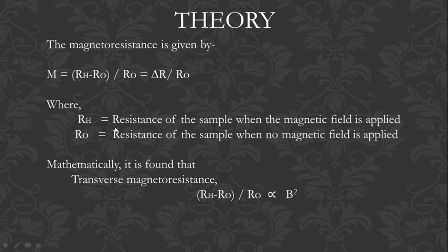R_0 is the resistance of the sample when no magnetic field is applied. Mathematically, the transverse magnetoresistance (R_H − R_0) / R_0 is proportional to B².